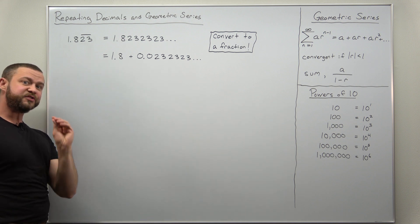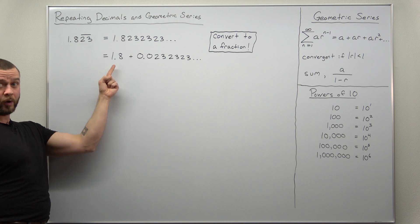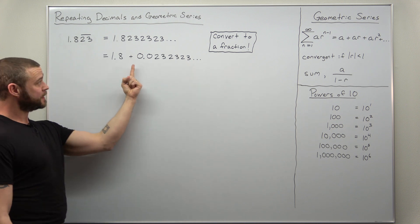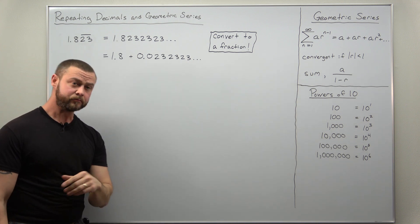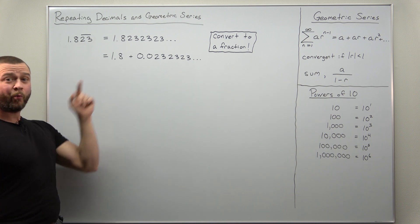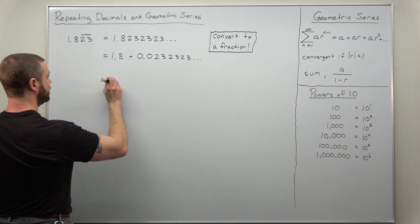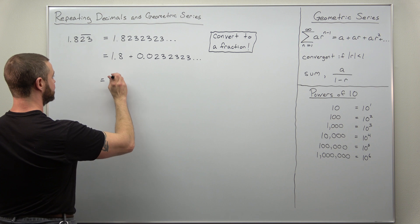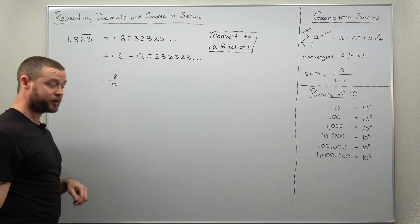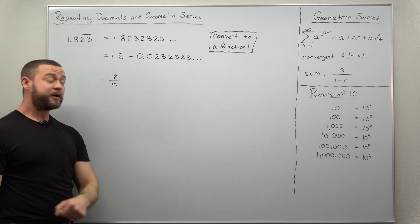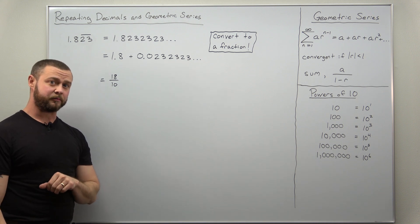The first thing we're going to do is split this into the non-repeating part 1.8 and then the repeating decimal part. We can easily convert 1.8 to a fraction, 18 over 10. What we want to now convert to a fraction is the repeating decimal part.